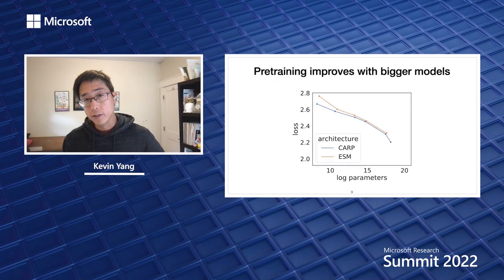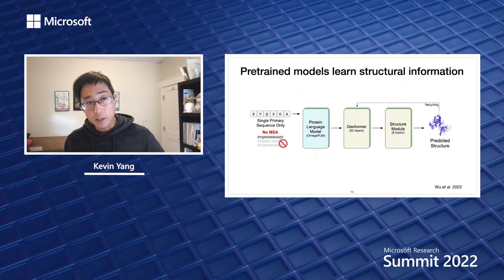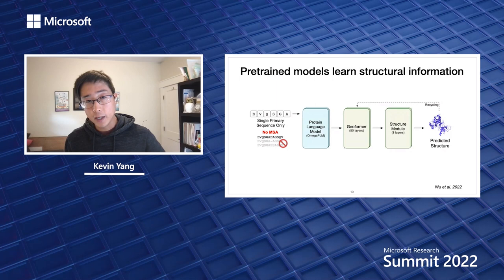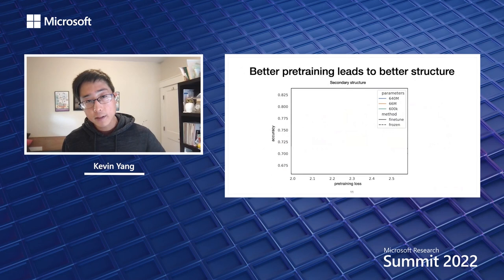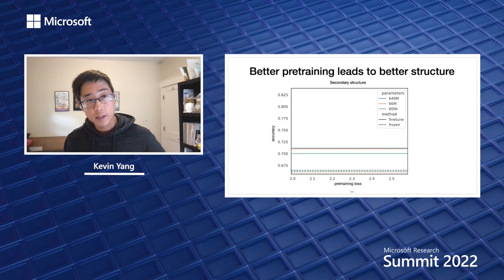The most commonly used model is ESM1B, a transformer model. These models are very good at learning structure — nowadays you can take a single sequence, run it through a protein language model pre-trained to reconstruct sequences, and make very accurate structure predictions. In general, the longer you pre-train and the bigger your model, the more accurate your structure predictions. Shown here: before pre-training, we get about 70% accuracy on three-class secondary structure prediction; after pre-training, the longer we pre-train, the better the performance.